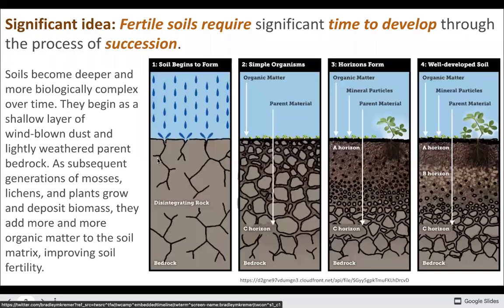5.3 - soil degradation and conservation. Fertile soils require a lot of time to develop through succession. This chart shows how we turn from bedrock into soil, starting with the C horizon as it becomes unconsolidated material. As lichens and other plants start to develop, they create organic matter in the O horizon. This organic matter decomposes and combines with rock and minerals to create the A horizon, our topsoil. As the C horizon continues to break down and the A horizon becomes depleted, we get the B horizon in between.